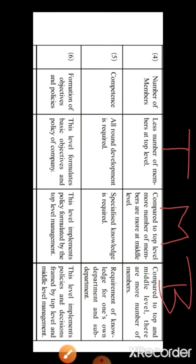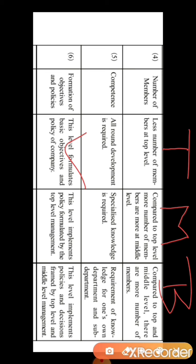The sixth point is formation of objectives and policy. The top level management formulates the basic objectives and policies of the company. The middle level management implements the policy formulated by the top level management — whatever policies are framed by the top level are given to the middle level to execute. The bottom level implements the policies and decisions framed by both the top level and middle level management — whatever policies and decisions are taken by the top and middle levels are implemented at the bottom level.